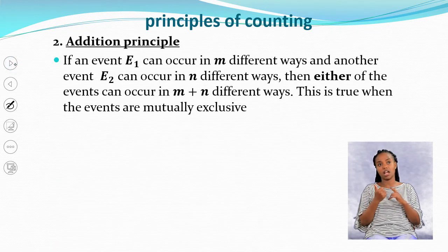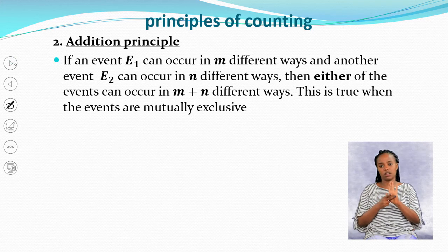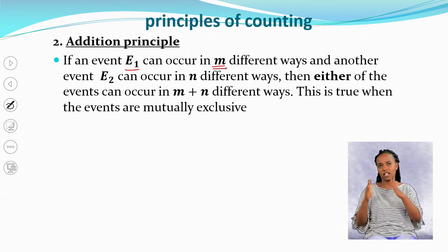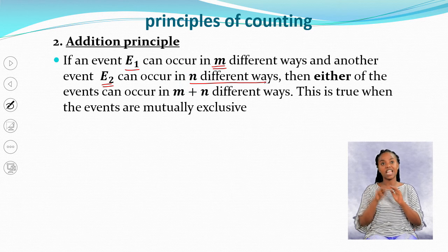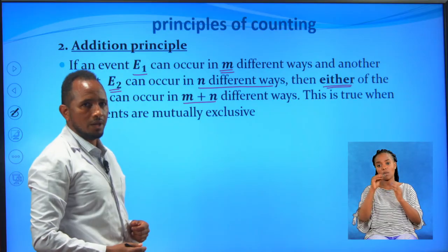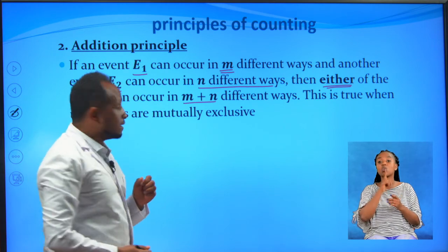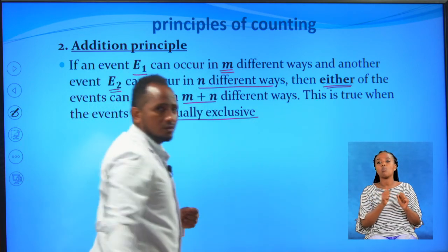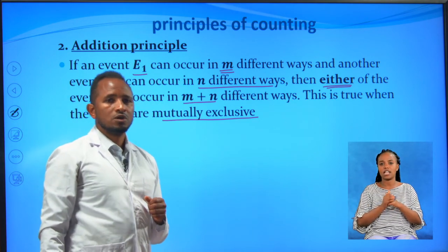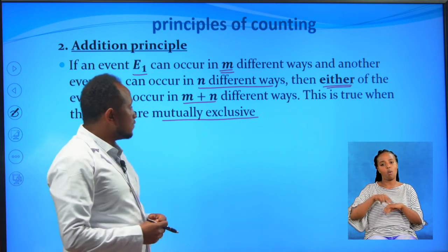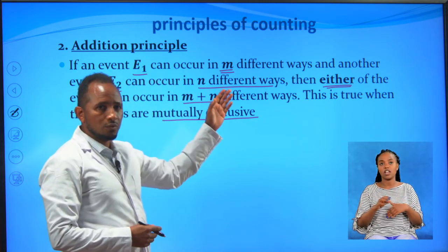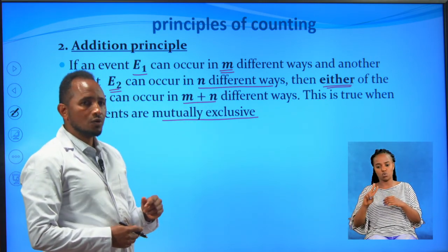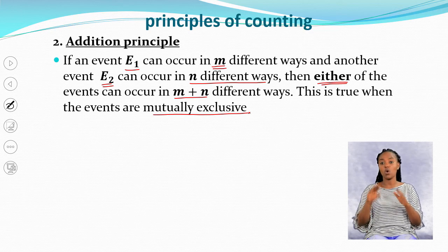The second principle of counting is the addition principle. If an event E1 occurs in M different ways and another event E2 can occur in N different ways, then either of the events occurs in M plus N different ways. This is true when the events are mutually exclusive — meaning events that do not have any intersection or common outcomes.